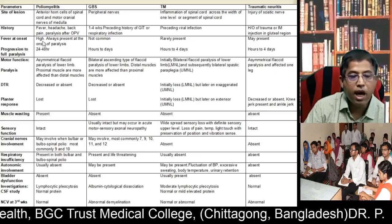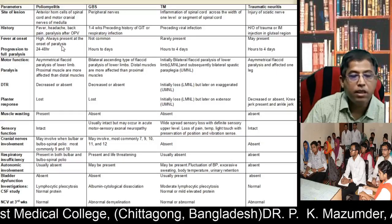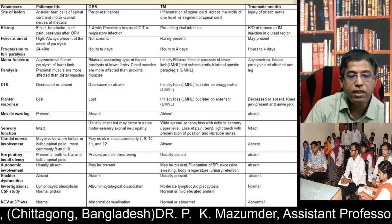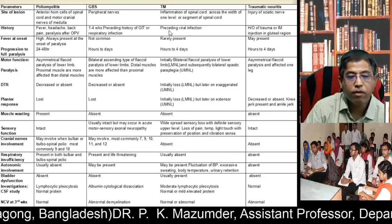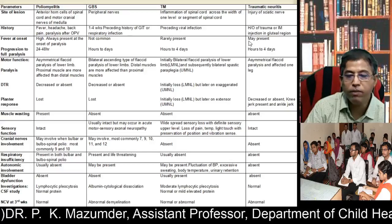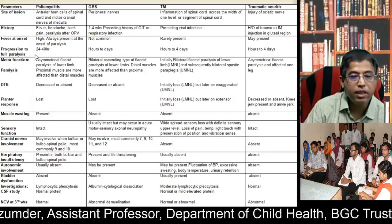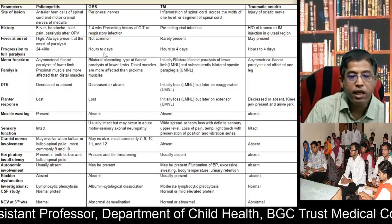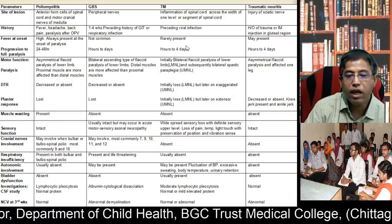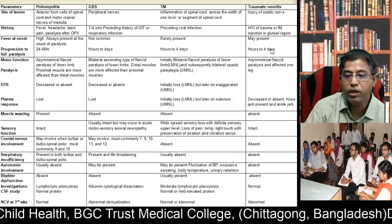Fever at onset: high fever is always present at onset of paralysis in poliomyelitis. In Guillain-Barré syndrome, fever is uncommon. In transverse myelitis, fever is rarely present. In traumatic neuritis, fever may be present. Progression to full paralysis takes 24 to 48 hours in poliomyelitis, hours to days in GBS, and hours to 4 days in both transverse myelitis and traumatic neuritis.